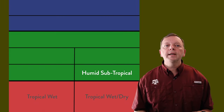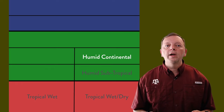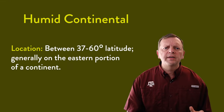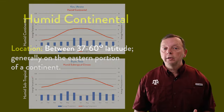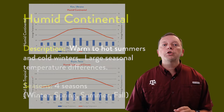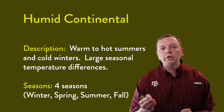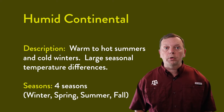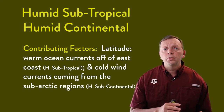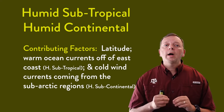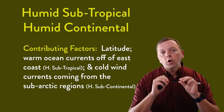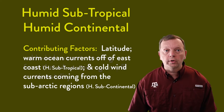The second east coast climate is the humid continental climate, which lies further from the equator than the humid subtropical, usually found between 37 and 60 degrees latitude. The humid continental climate has a much stronger seasonal pattern of temperature and precipitation. Winters tend to be much drier and colder than its summers. The major climate factors are latitude, warm ocean currents for the humid subtropical, and cold wind currents coming from the poles for the humid continental.